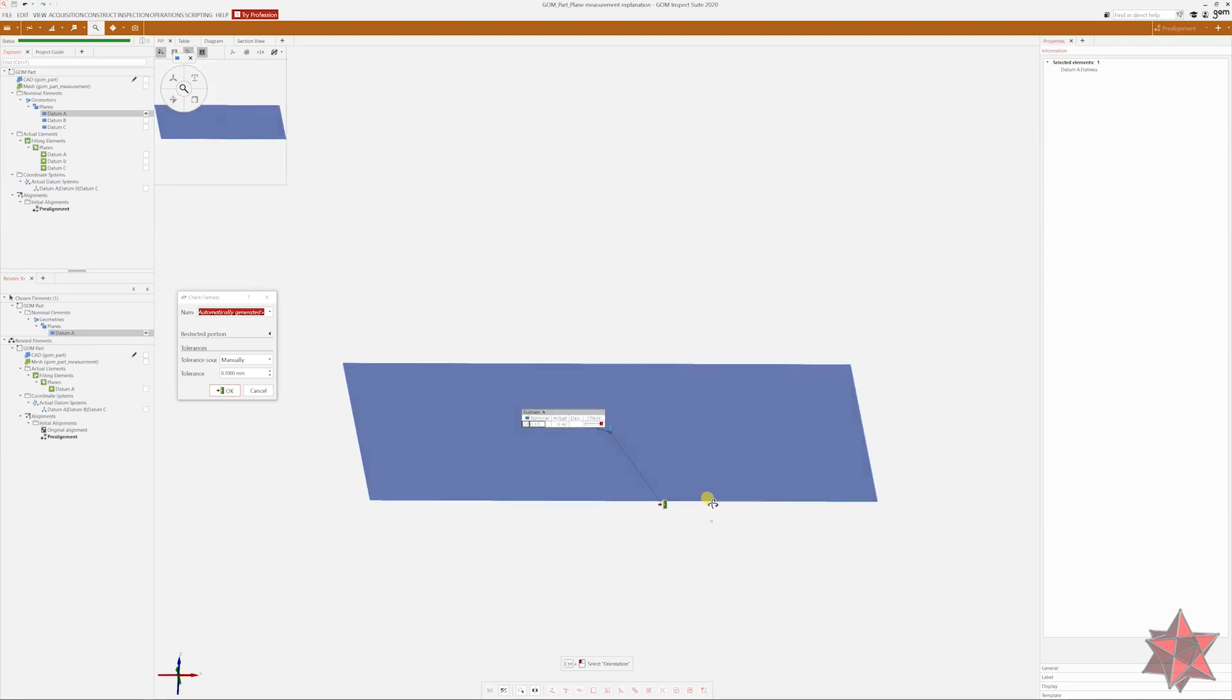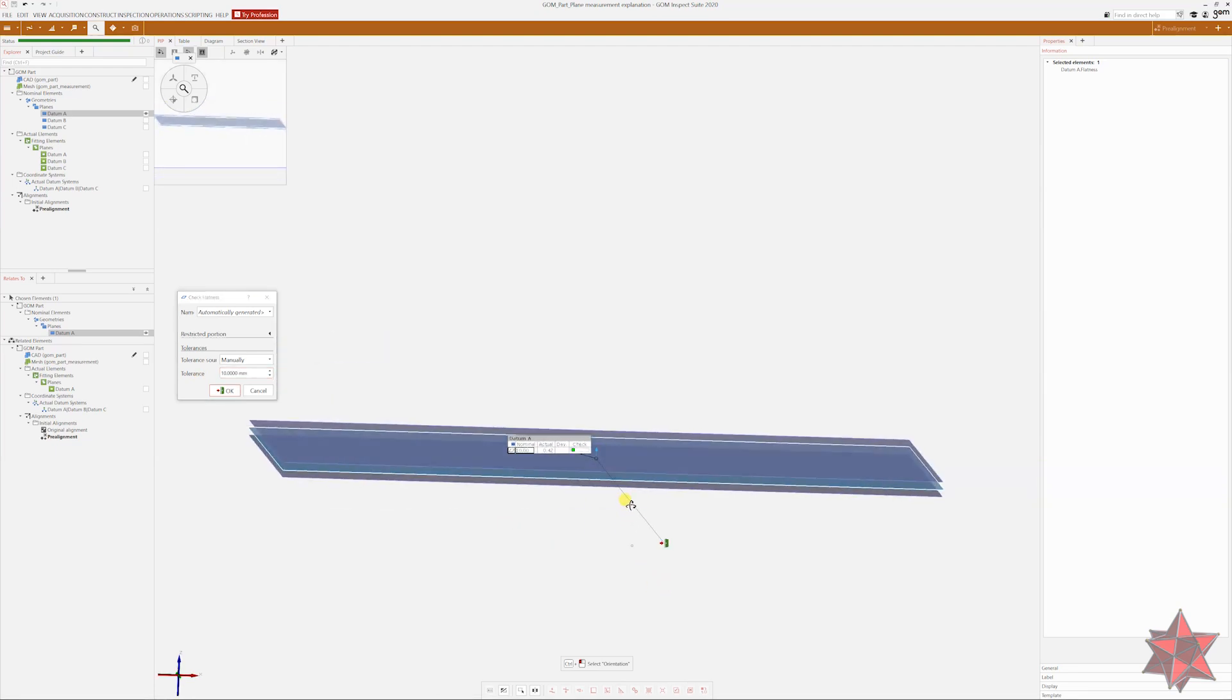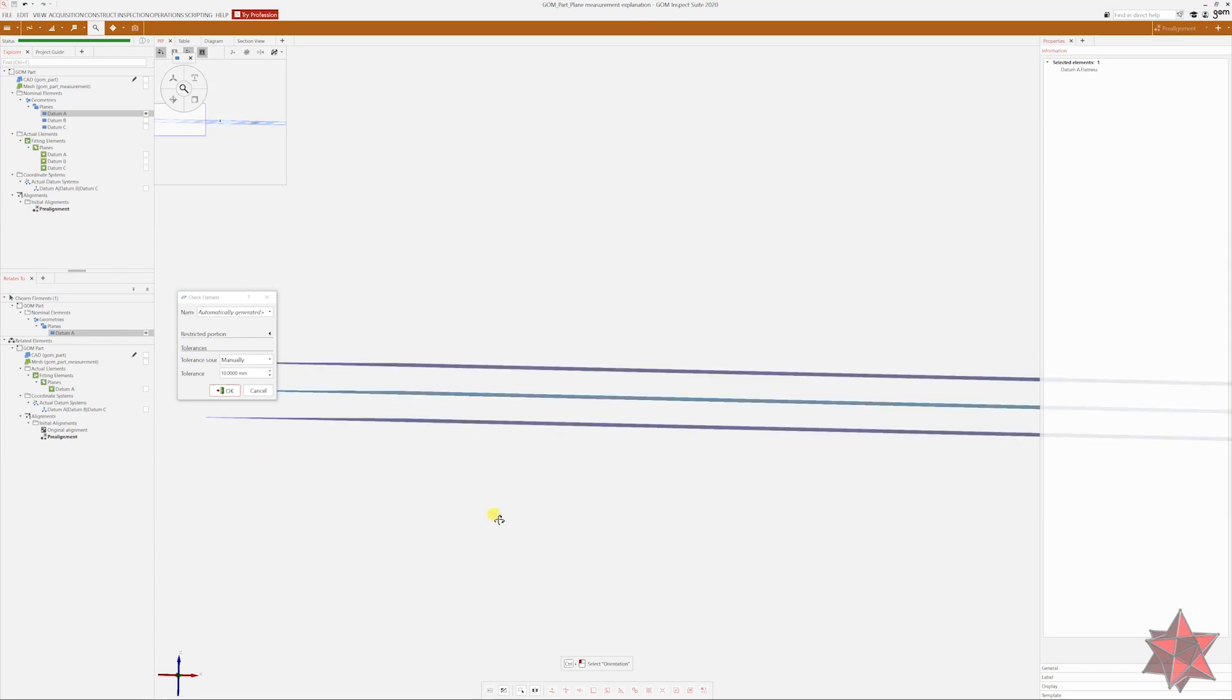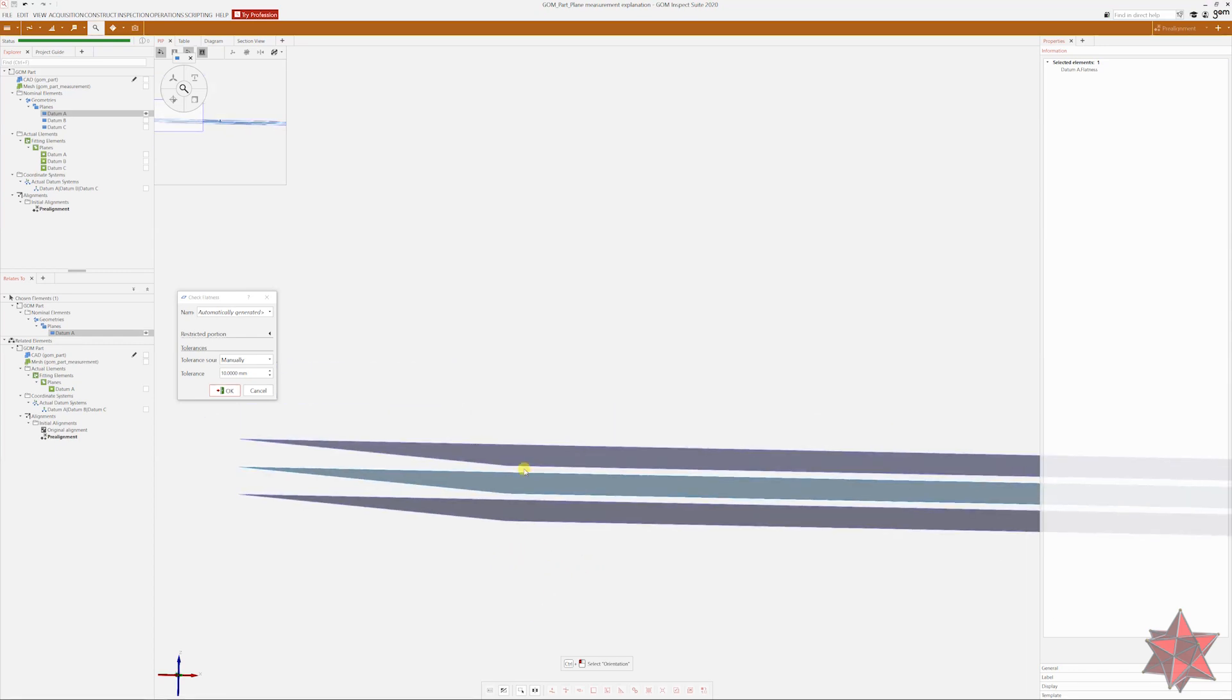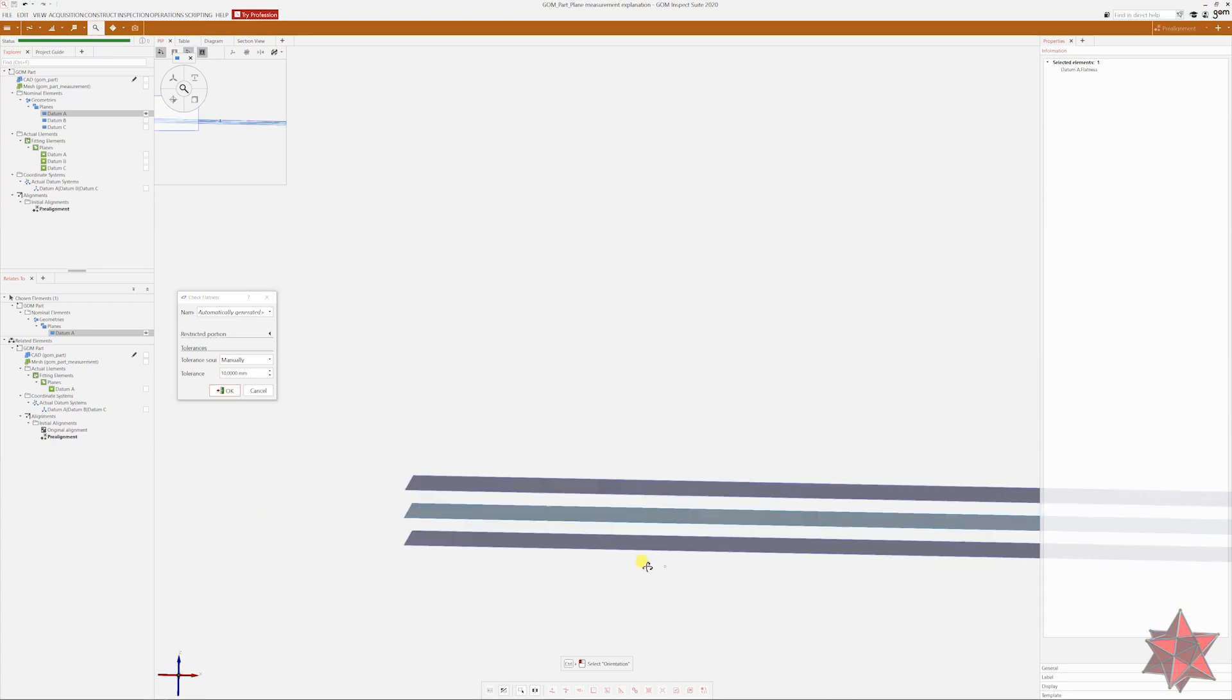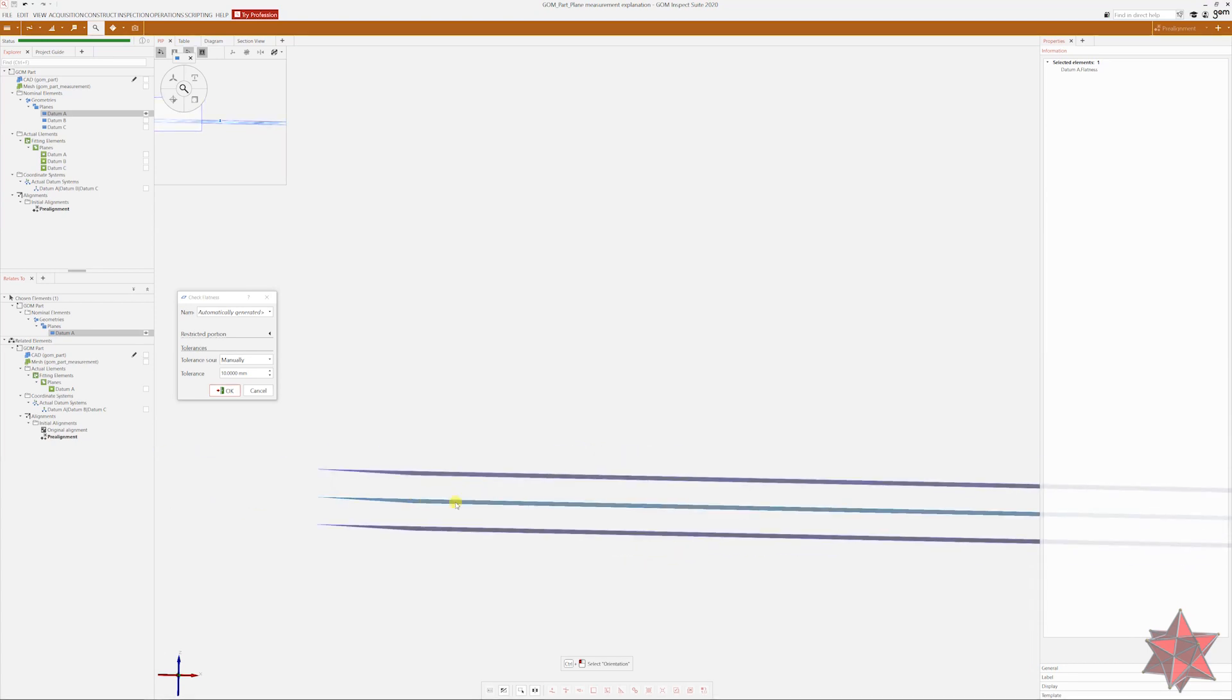And to see better the tolerance and everything, I will put in the tolerance 10 millimeters. And now you can see better the tolerance frames and everything. From here to here it has to be 10 millimeters. This is the nominal plane.